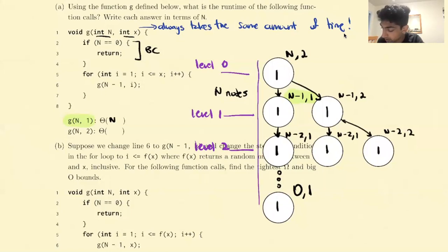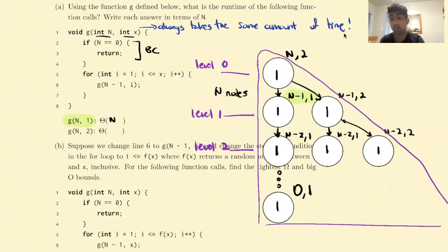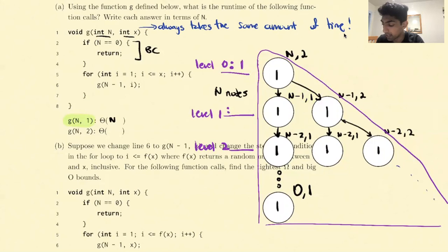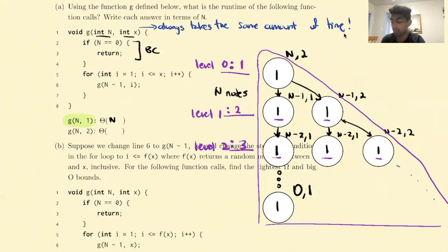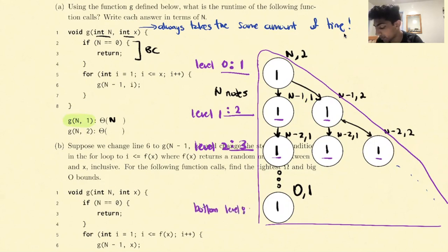This tree is going to look like a triangle. To figure out the runtime, the next step is to figure out the work per level. At level 0, the amount of work is 1. At level 1, we're doing 2 work. At level 2, we're doing 3 work. At the bottom level, we'll be doing roughly n work. The height of this tree is still n, so the bottom level will have a total of n nodes.